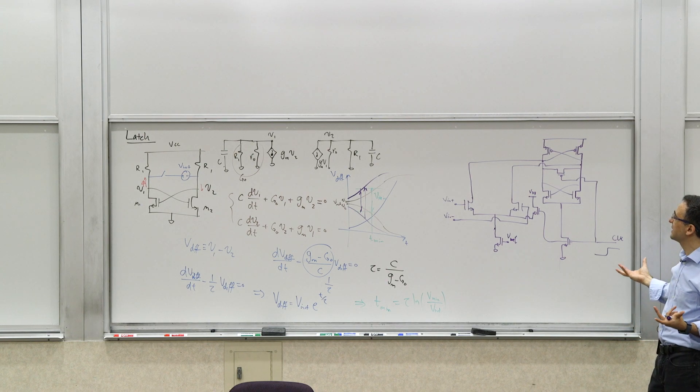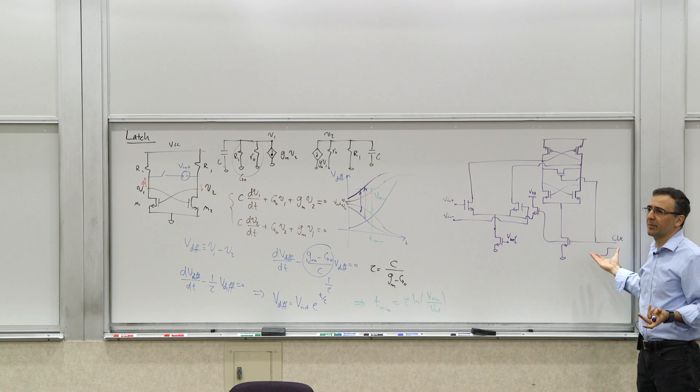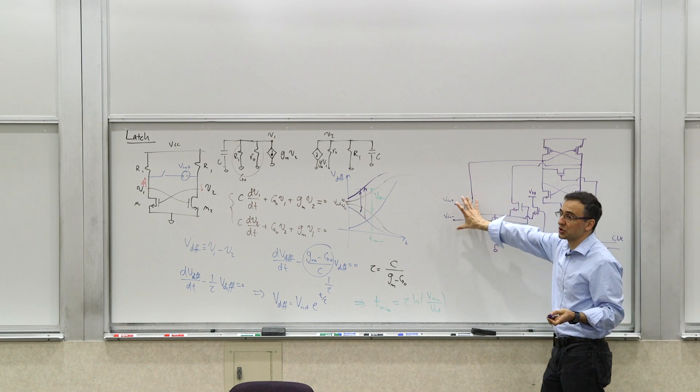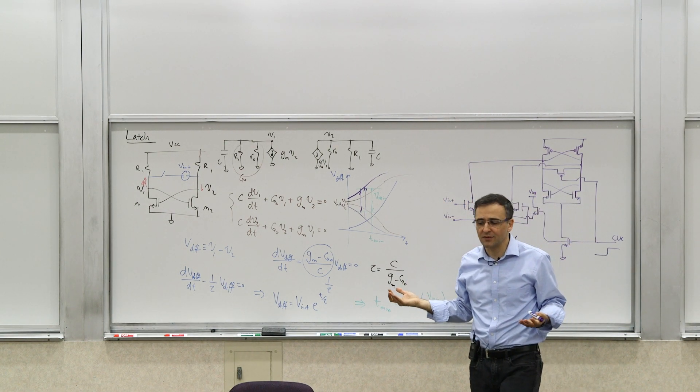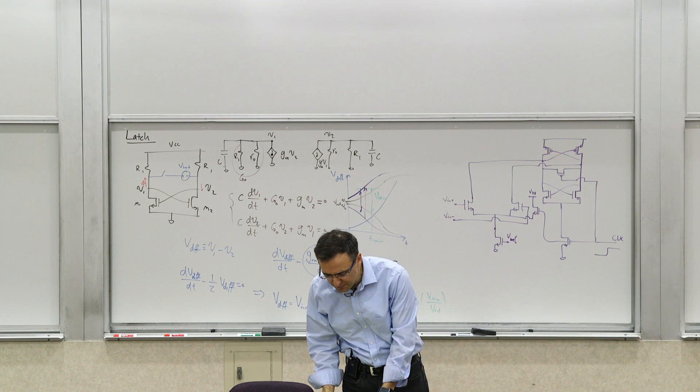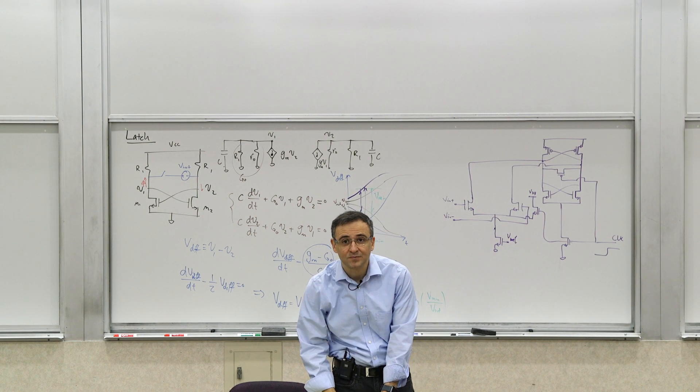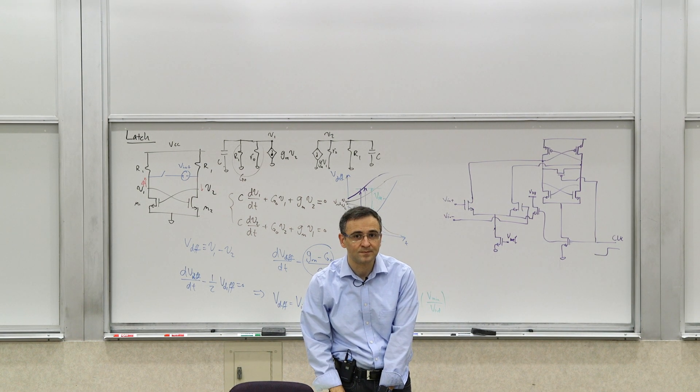So you can do things of that sort. So this can be a simple latched comparator. Now you can have more stages upfront, you can have offset cancellation, you can actually make it a pretty complex and sophisticated based on that. But that's the basic principle behind it. Any questions? All right.